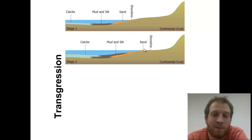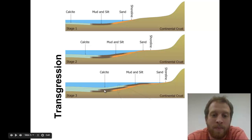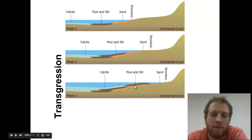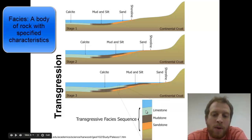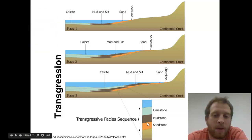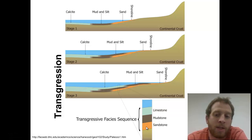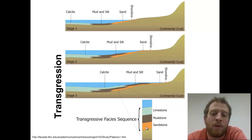Next we're going to go to stage three. You guys should be able to guess what's going to happen to our sequence — it should move further towards the right. See how my sandstone is now further up shore, and my mud and silt is above my sand layers, and now my calcite is above my former mud and silt layers. If we looked at the facies — which is just the sequence of rock layers we have present — we would have limestone on top, mudstone below that, and sandstone right below that. That sequence of limestone, mudstone, sandstone tells you that it's a transgressive environment, meaning the sea level was rising the whole time.